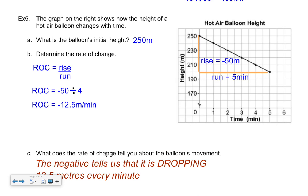This last example is interesting — I love this question because it's going down, which makes it different. This is a negative slope, and a negative trend means the rate of change is negative. Kids often struggle when it's a negative slope. The question asks for the initial height: when time is zero, that's the beginning, so the first point on our graph is 250. We've got a hot air balloon starting at 250 meters high and slowly drifting toward the ground. The question is: how fast is it dropping?